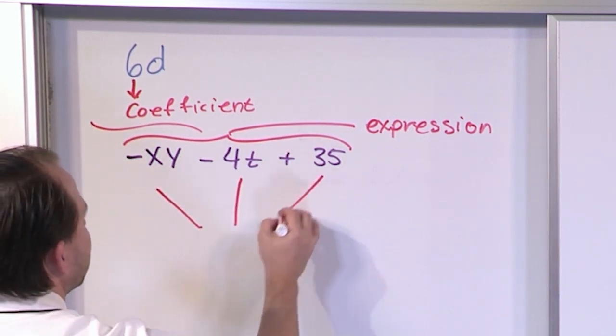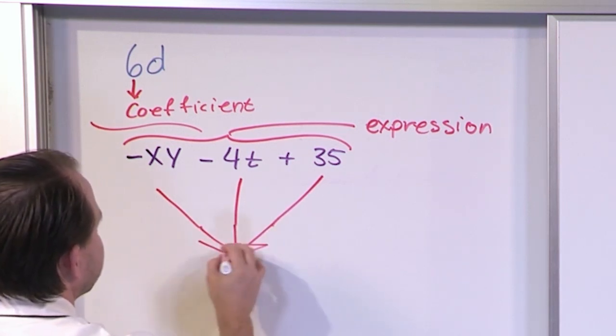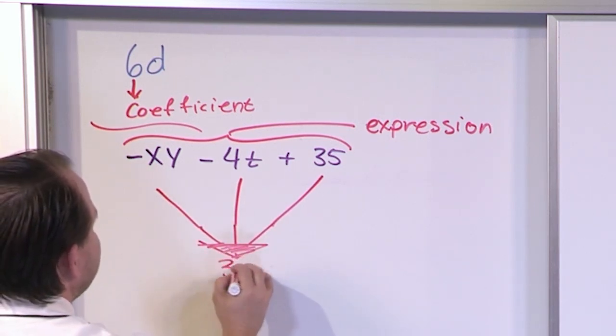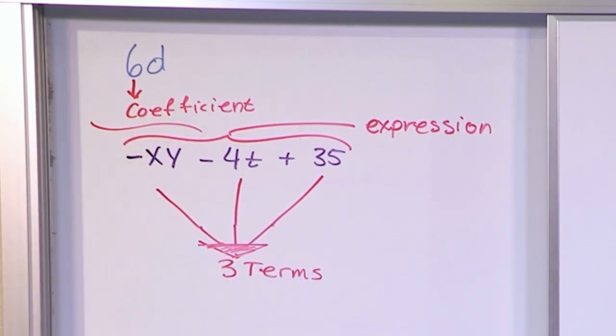So we have one there, one there, and one there. So we draw a little nice big fat arrow or something like this. We have three terms inside of this algebraic expression. So if on a test you say, how many terms do you have? Well, there you go. You have things added together. There are three of them. So that's called the terms, three terms.